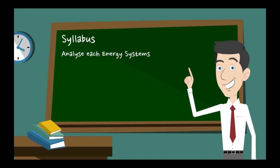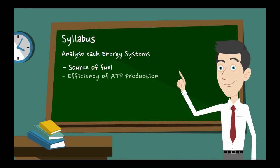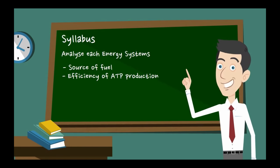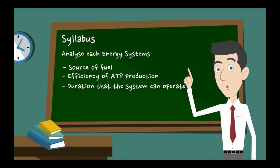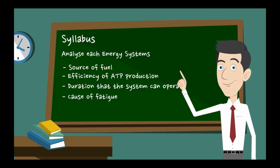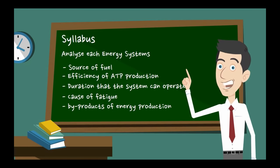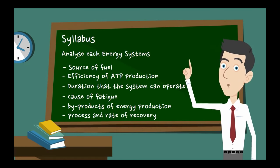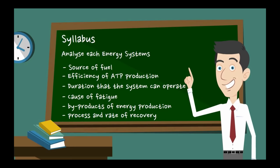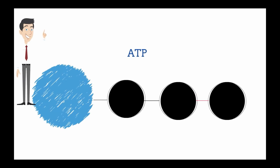The learn-to for the syllabus asks you to analyze each energy system in terms of its source of fuel, the efficiency of which it produces ATP, the duration that the system can operate, the cause of fatigue, the byproducts of energy production, and the process and rate of recovery.